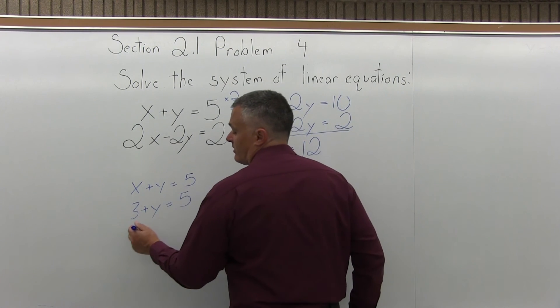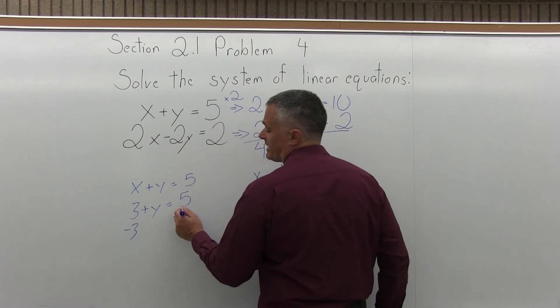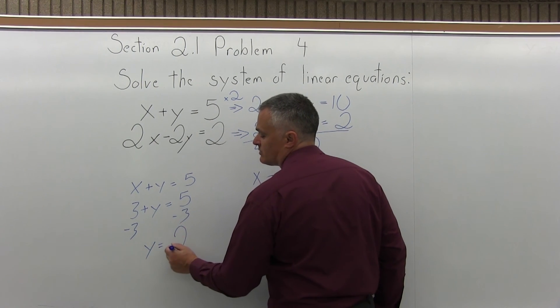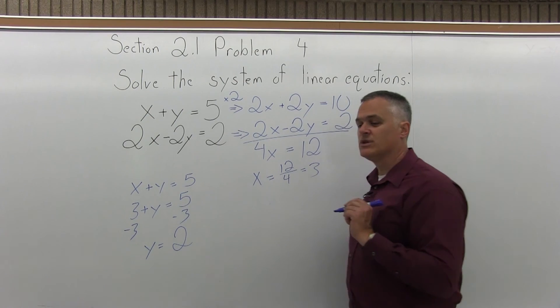And now bring the 3 over to the right-hand side. You're going to go minus 3 on the left, minus 3 on the right, and you will have y equals positive 5 and negative 3 is positive 2.